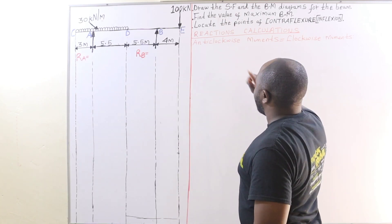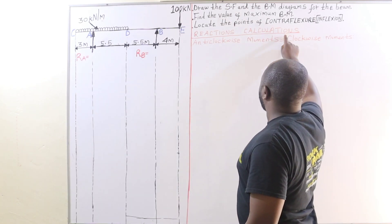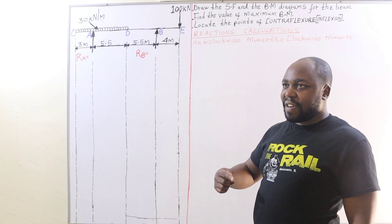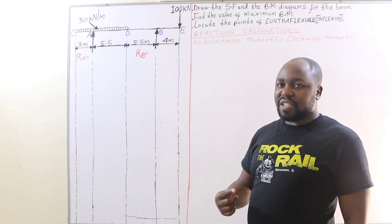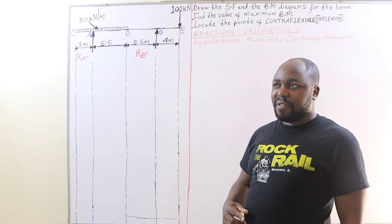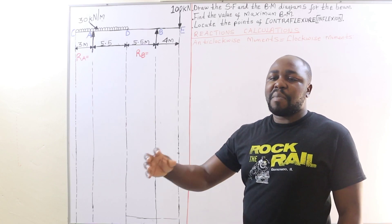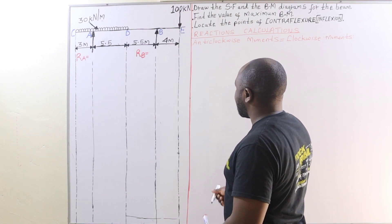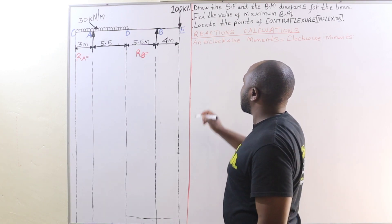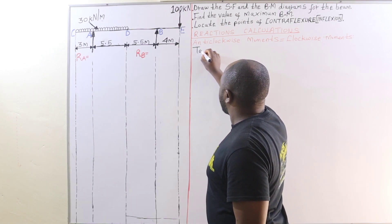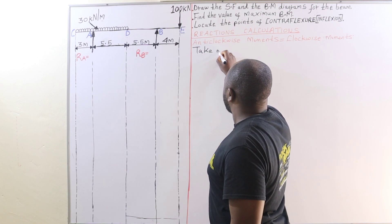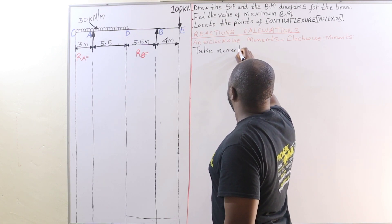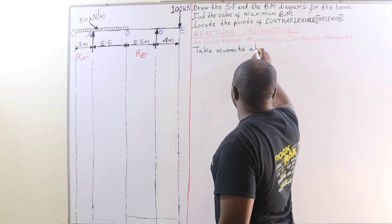Here we have the reaction calculations. Remember, the sum of anticlockwise moments is always equal to the sum of clockwise moments. In this case, we are going to calculate the reactions as follows. We are going to take moments about point A.